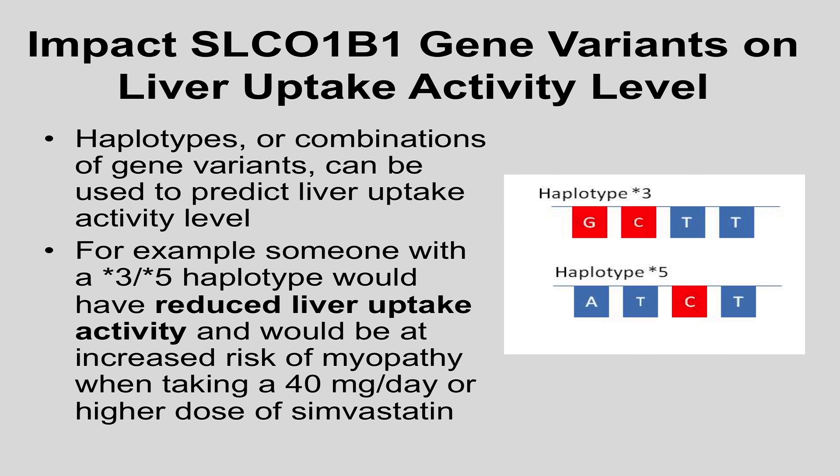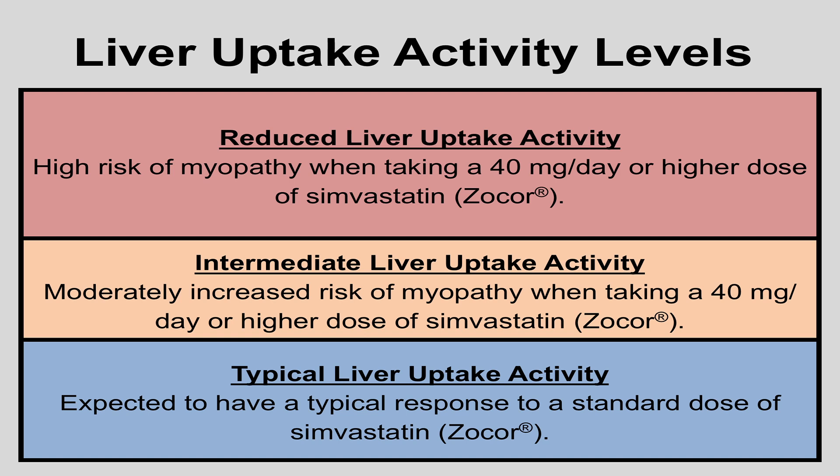Haplotypes, or combinations of genetic variants, can be used to predict a person's liver uptake activity level. For example, someone with a star 3/star 5 haplotype would be predicted to have reduced liver uptake activity, and would be at increased risk of myopathy or muscle weakness when taking a 40 mg per day or higher dose of Simvastatin. Based on your genetic result, you will be placed into a predicted liver uptake activity level category. Individuals predicted to have reduced liver uptake activity are at high risk of myopathy at 40 mg per day or higher; those with intermediate activity are at moderately increased risk; and those with typical liver uptake activity are expected to have a typical response to a standard dose of Simvastatin.